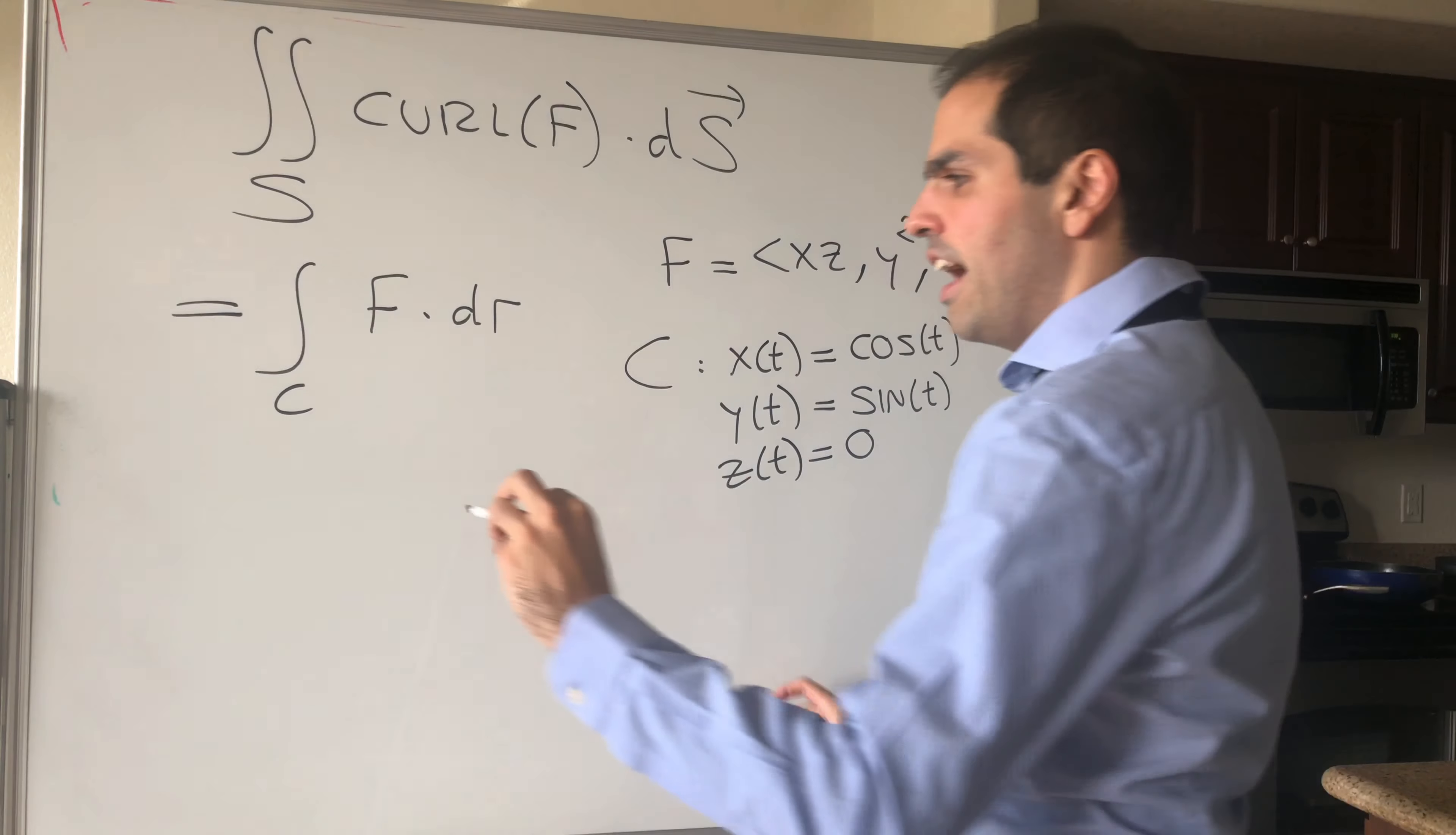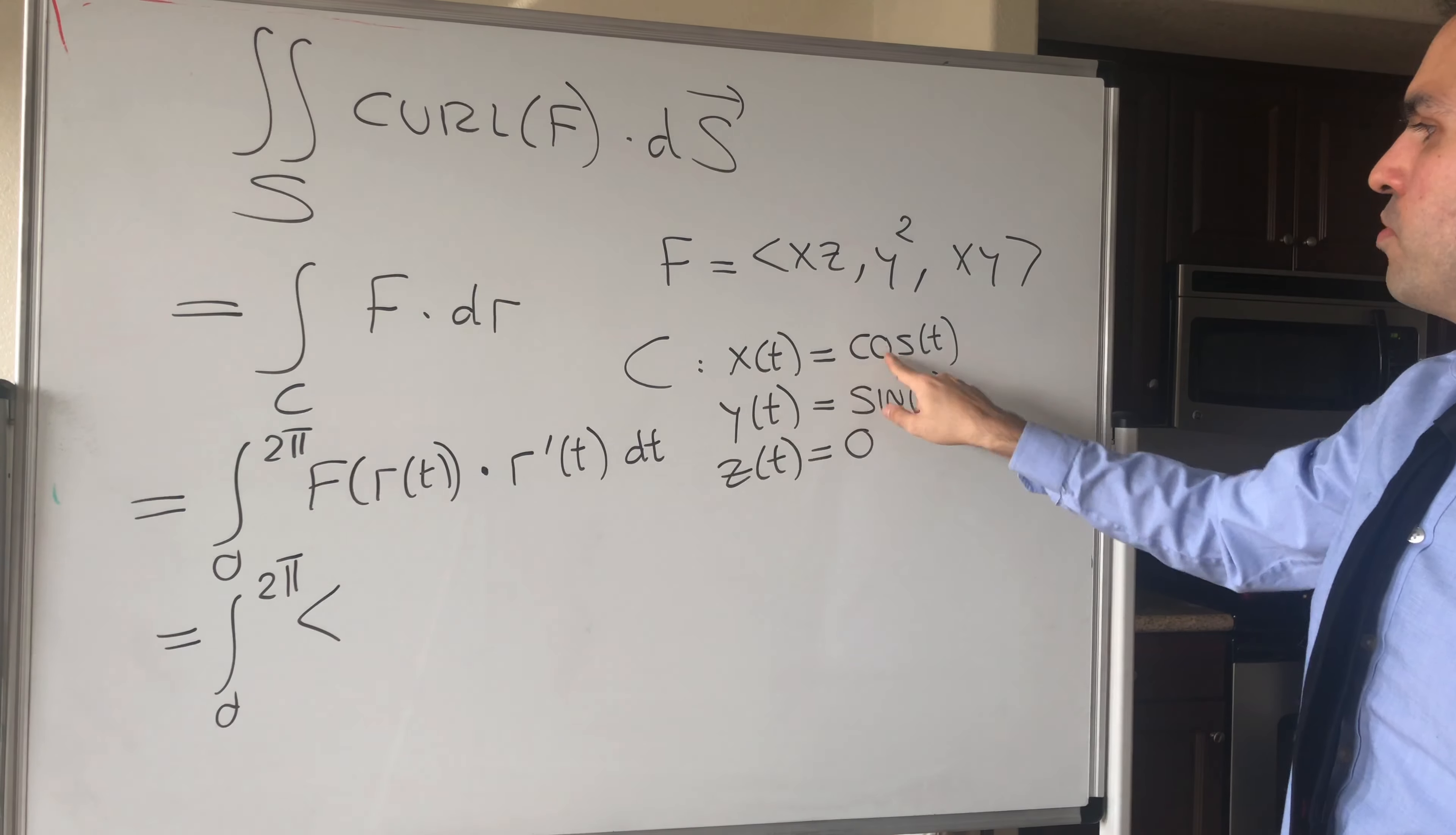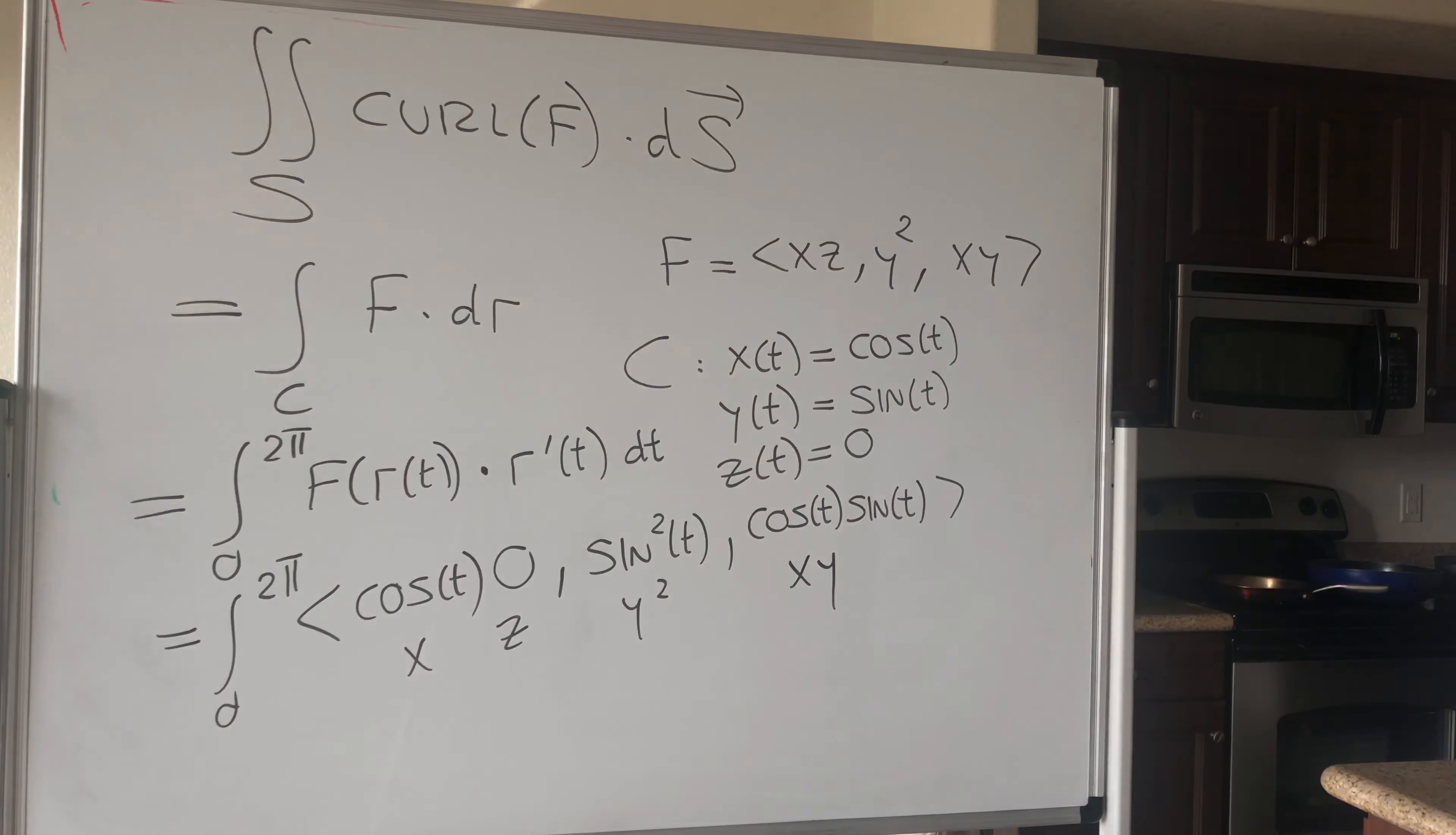So, how do you calculate a line integral? Remember, it's the integral from 0 to 2 pi of F of r of t. So, just F, but you plug in x of t, y of t, z of t, and dotted with the derivative. So, x prime, y prime, z prime dt. And so, let's calculate this. This becomes the integral from 0 to 2 pi. Again, x of t becomes cosine t, z of t becomes 0. So that's your xz. And then, y squared becomes sine squared of t. That's your y squared. And then, xy just becomes cosine t sine of t. So that's xy.